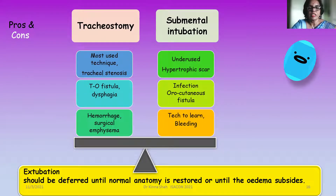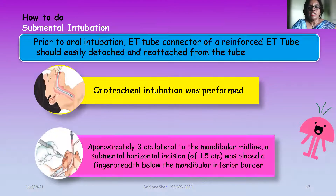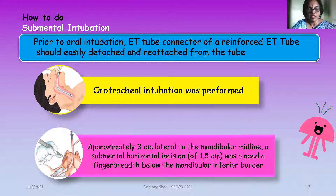Whichever technique is used, extubation should be deferred until normal anatomy is restored. Prior to oral intubation, the tube connector of a reinforced endotracheal tube should be detached and then reattached — this is the most crucial part. If it cannot be detached, the tube connector should be cut away, and an appropriate-size cuffed tube connector reattached to make it feasible.